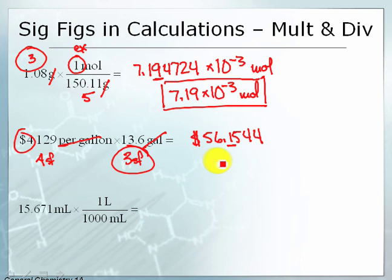so my answer should have 3 significant figures. 1, 2, 3. And if I round this, the next digit's a 5, so that should go up. 56.2 dollars.